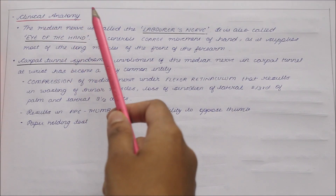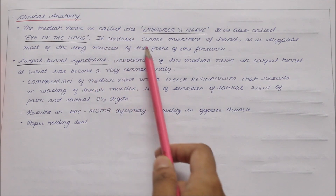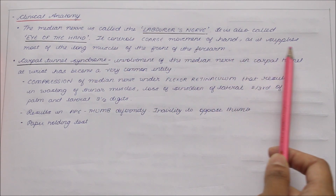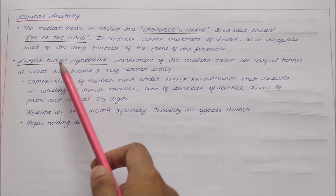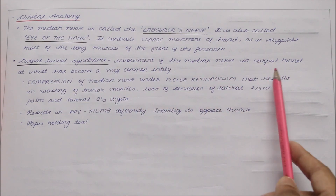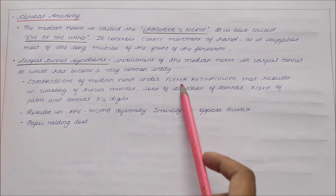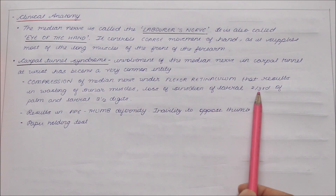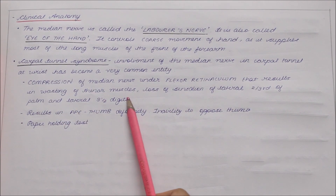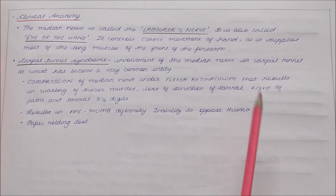Moving on to the clinical anatomy of the median nerve: it is also called the laborer's nerve and the eye of the hand, as it controls coarse movements of the hand. An important condition is carpal tunnel syndrome — compression of the median nerve under the flexor retinaculum — which results in wasting of the thenar muscles, loss of sensation of the lateral two-thirds of the palm and lateral three and a half digits, and ape thumb deformity (inability to oppose the thumb), tested by the paper-holding test.